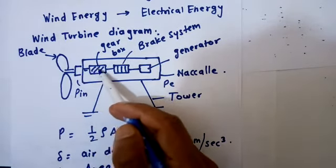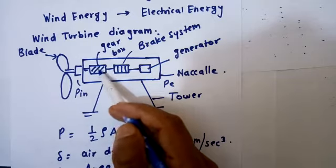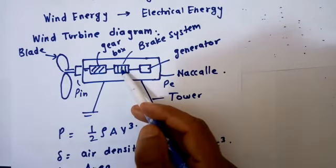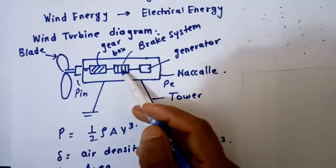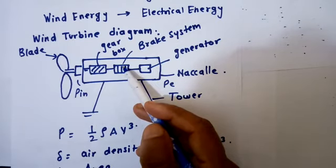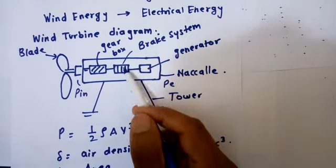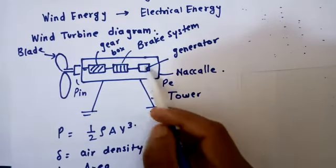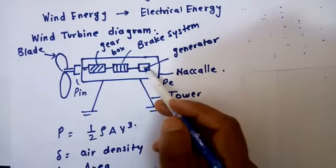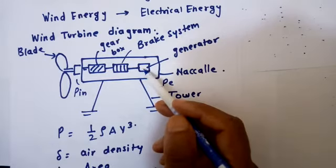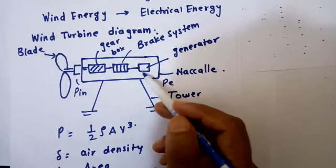This is done by using some gear ratio. The brake system means that whenever there is an over-speed condition, we have to stop the wind turbine. For that purpose, we use some mechanical braking arrangement. The third one is the generator, which provides electrical power generation. We normally use induction generators or synchronous generators.